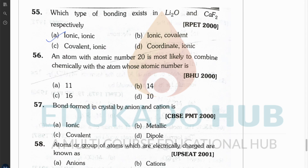Question fifty-six (from Punjab University): an atom with atomic number 20 — most likely to combine chemically with the atom whose atomic number is what? Write out the electronic configuration, then figure out with which element it will combine such that when they combine, the octets or sub-orbitals are completely filled. I want you to find the answer yourself and tell me.